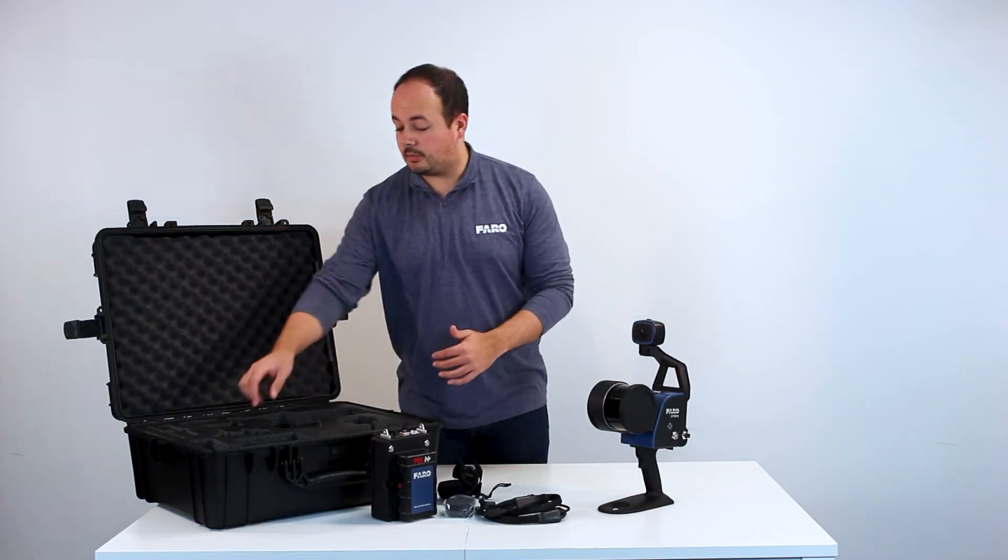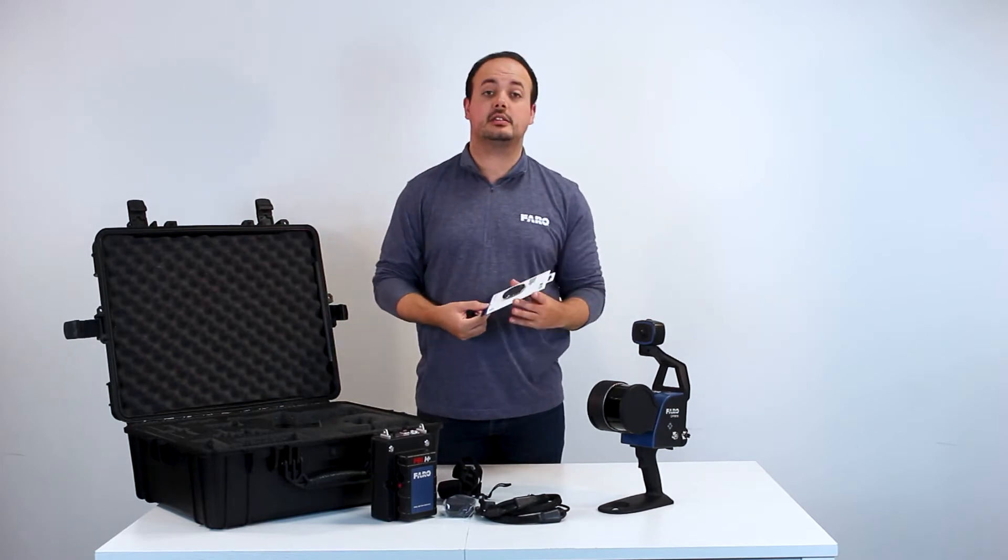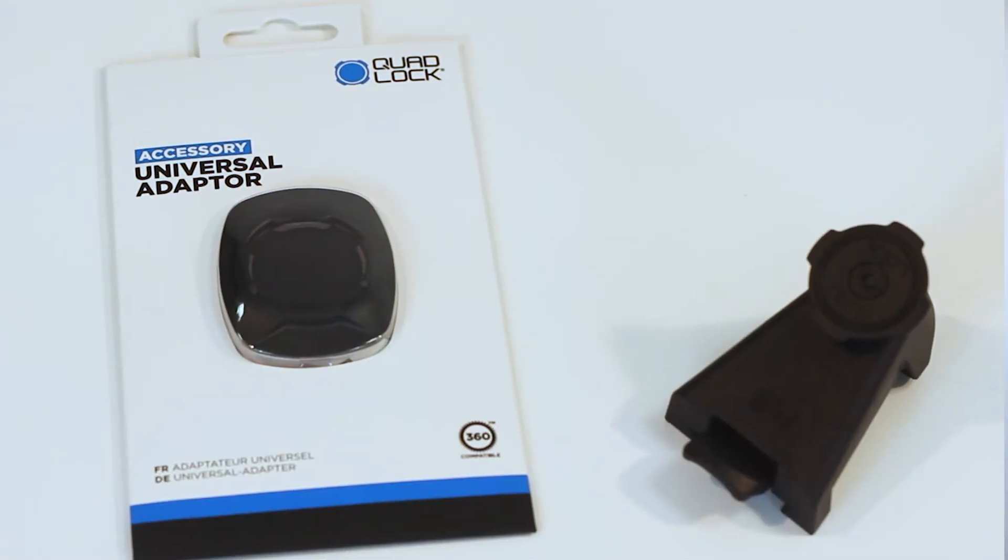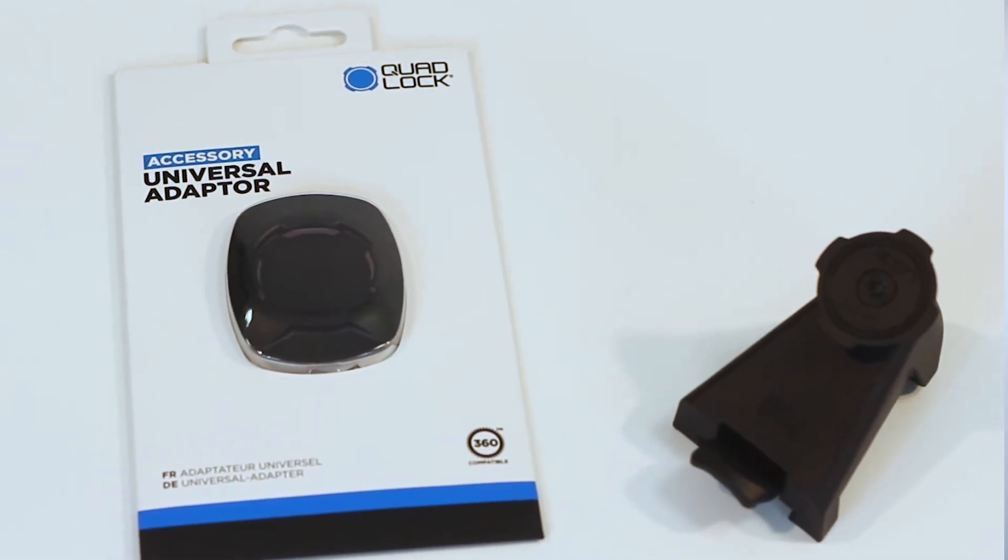Finally a quad lock mount is provided to attach a mobile device to the back of your Orbis scanner. This comes in two parts. The first part clips directly to the back of the scanner, the other attaches directly to your mobile device.